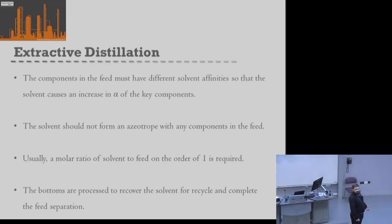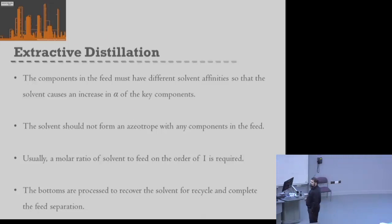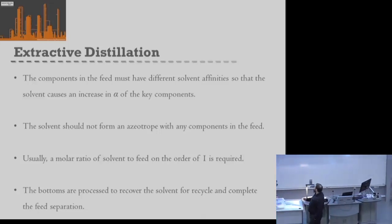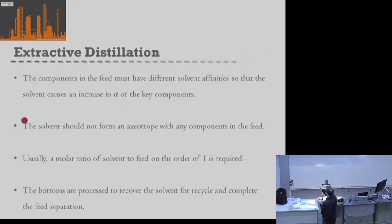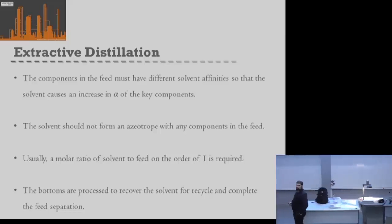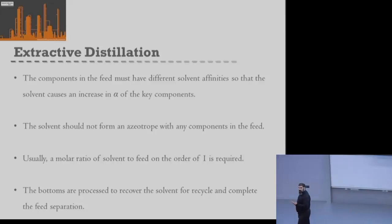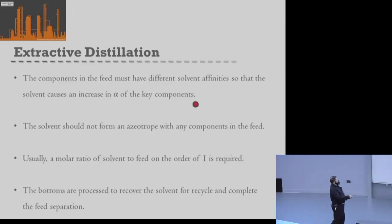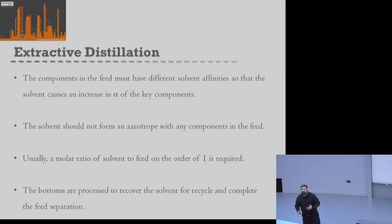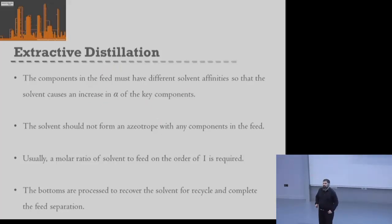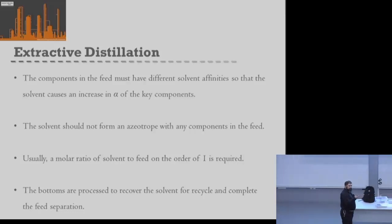The first alternative option is extractive distillation. The key to extractive distillation is that the feed components must have different solvent affinities, so that if we add a solvent, we essentially change their relative volatility. Since our system has an azeotrope, we likely have different types of chemicals — potentially a polar and a non-polar component. A solvent we add will prefer one component over the other, changing the relative volatility of our key components, which may allow us to achieve a separation.